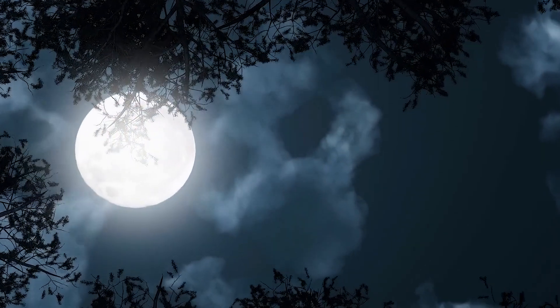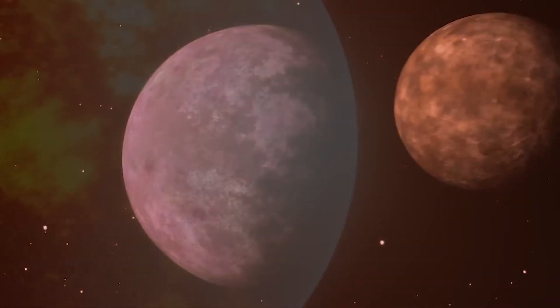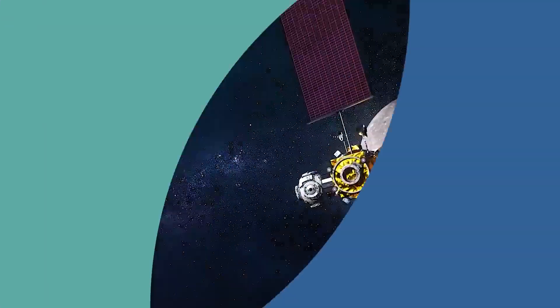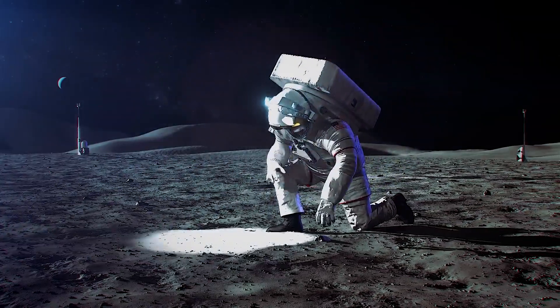So where did our moon come from? Well currently our understanding is that the earth had collided with a Mars sized object named Theia. But once we send future astronauts to the lunar surface again, who knows, we may actually have a whole new theory in the coming decades.